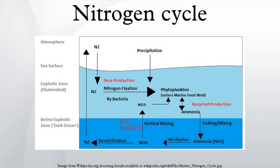Nitrogen gas is the largest constituent of the Earth's atmosphere, but this form is relatively unreactive and unusable by plants. Chemical processing or natural fixation are necessary to convert gaseous nitrogen into compounds such as nitrate or ammonia which can be used by plants. The abundance or scarcity of this fixed nitrogen frequently limits plant growth in both managed and wild environments.